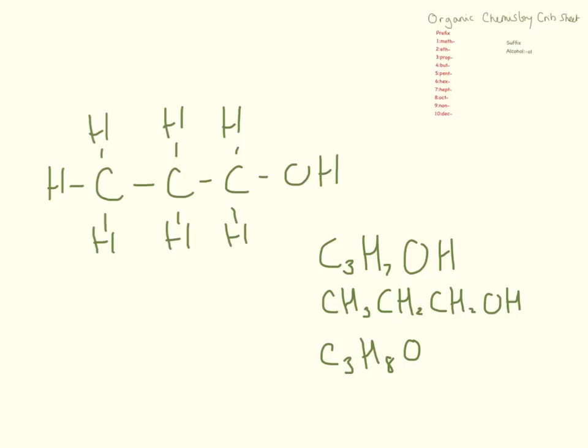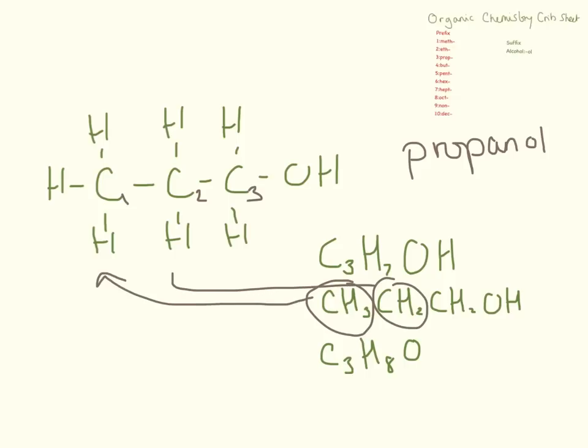This is the last one that you need to know about. We have one, two, three carbons. This is propanol. Again we have a few different ways of drawing this, a few different ways of writing out the formula, but if you notice they all have the same number of carbons, same number of hydrogens and the same number of oxygens. CH3 corresponds to this bit, then we have CH2 here, another CH2 here and an OH here.